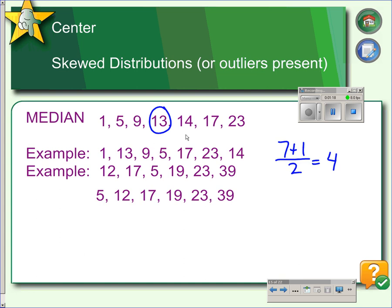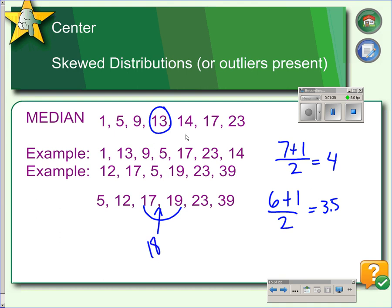In our second example here, again, the numbers are out of order, so they have been put in order here. Notice that there are 6 values, so you add 1, divide by 2, which gives us 3.5. So the median will be between the third and the fourth data value. So when it's between two values, you average those two values, and we find the median is 18.